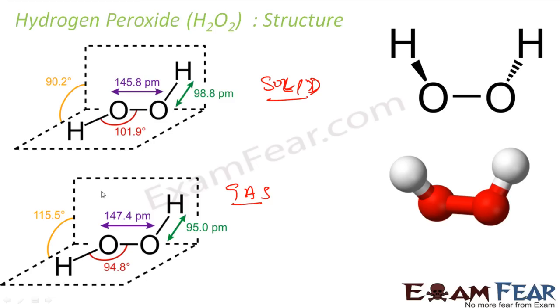The structure of hydrogen peroxide is different — that is not the case for other elements. For other elements, generally the structure is the same, but in this case it's different. This is the structure of hydrogen peroxide.